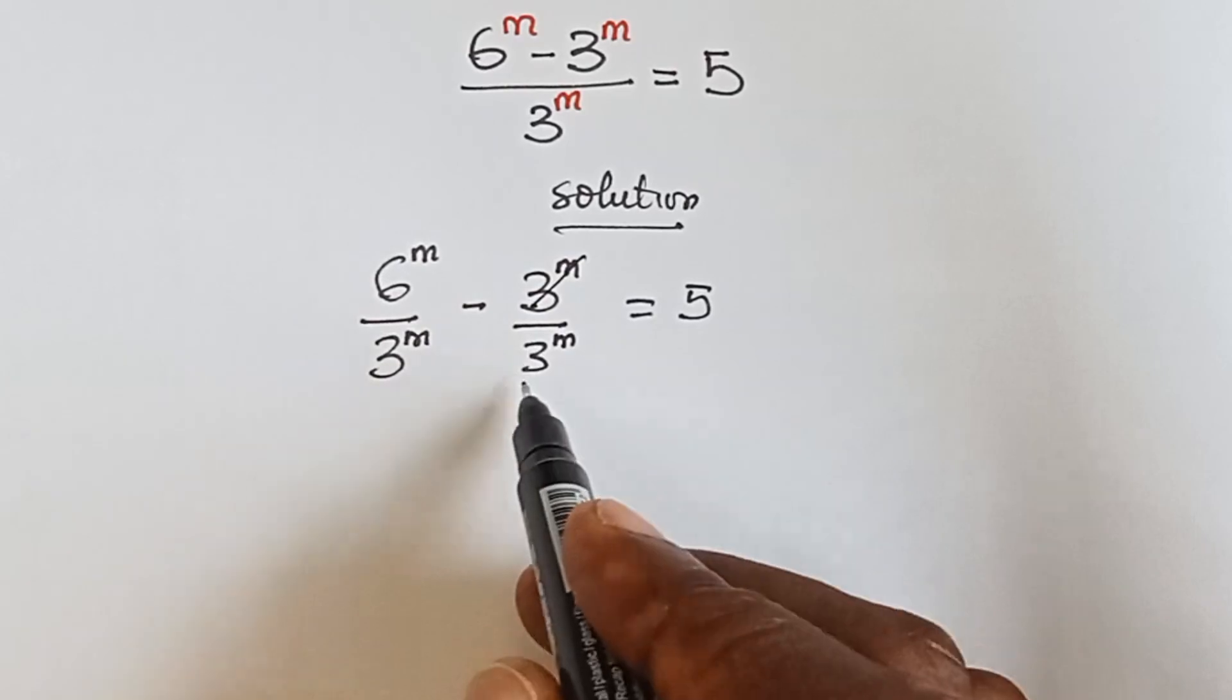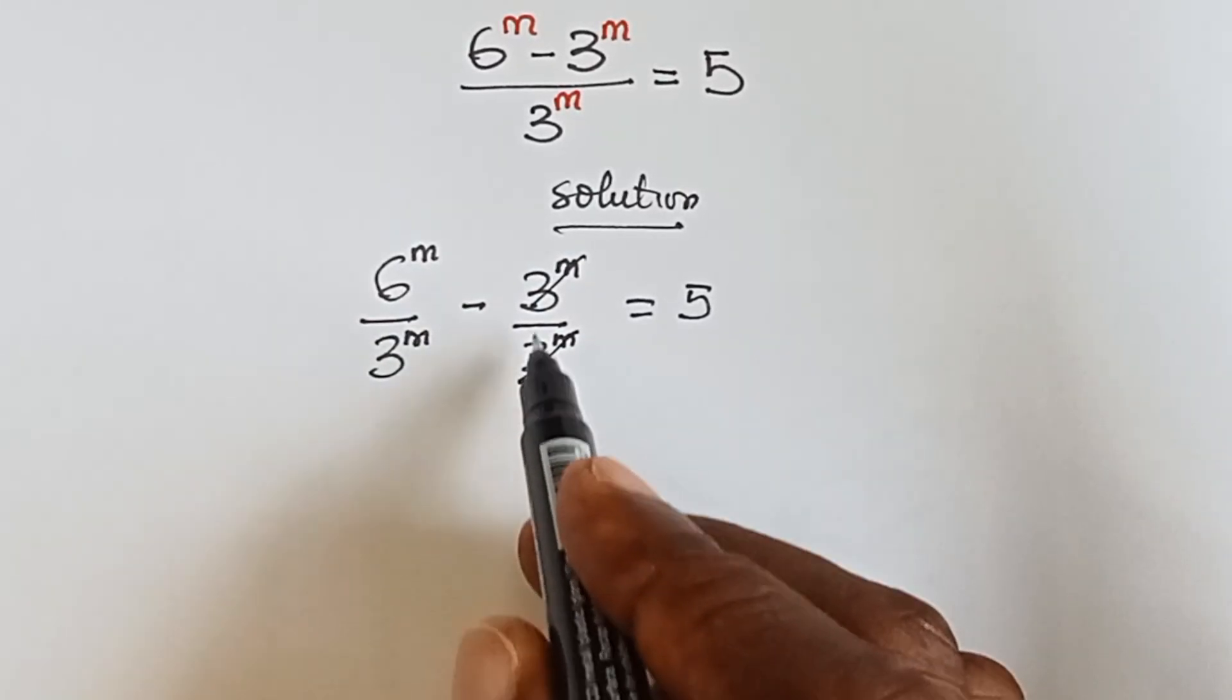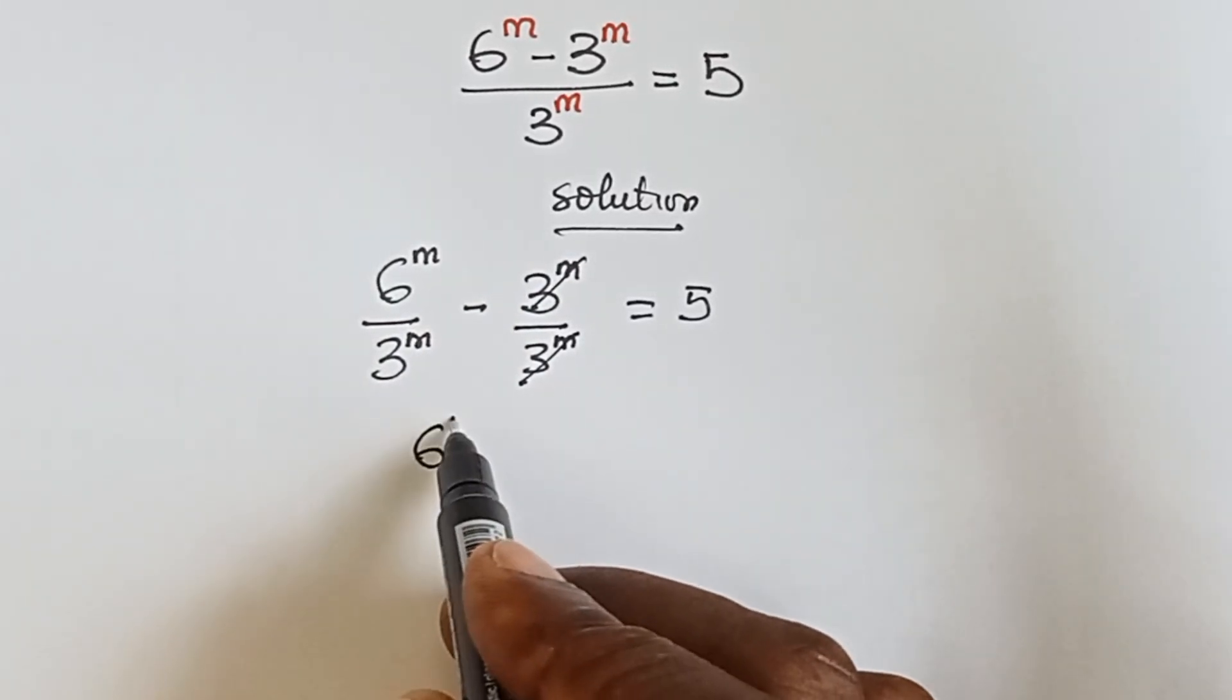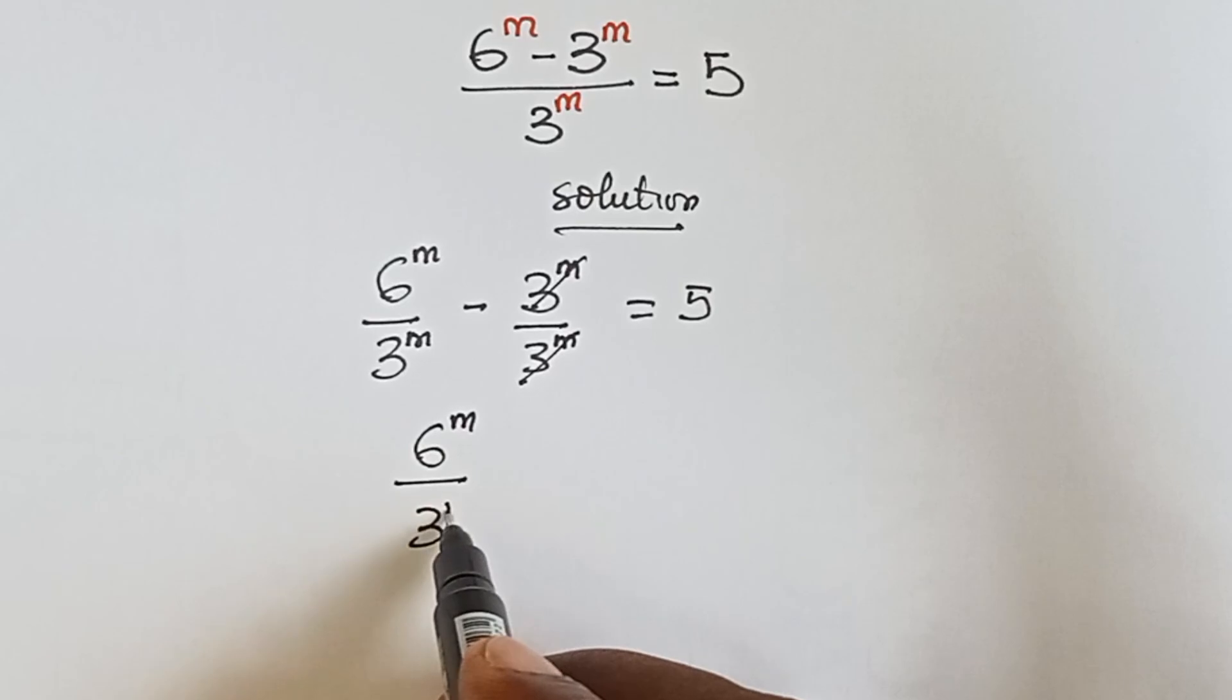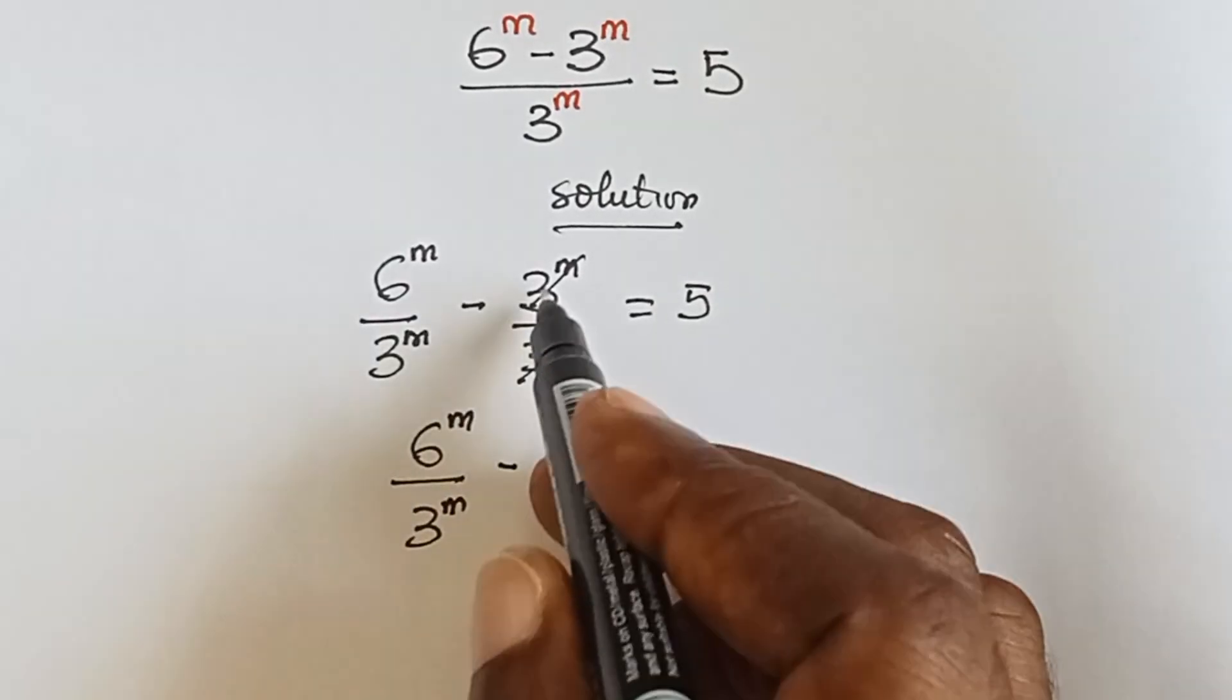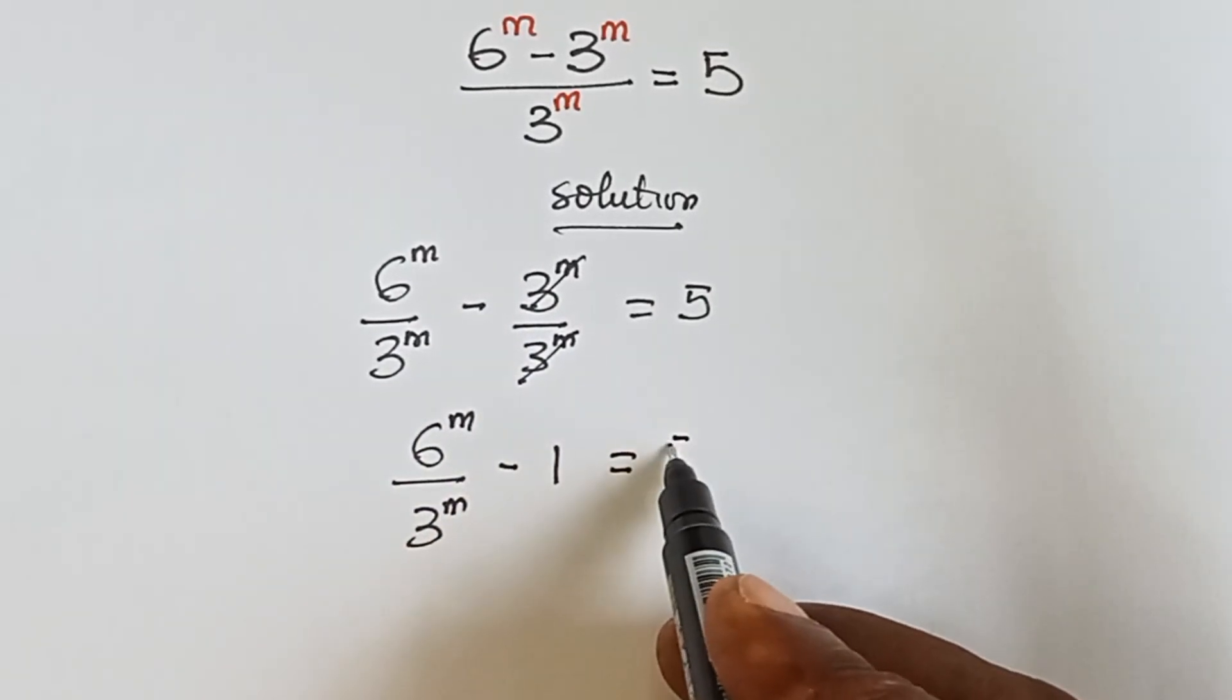From there, 3 raised to power m can cancel 3 raised to power m and that gives 1. So we have 6 raised to power m over 3 raised to power m minus 1 equals to 5.